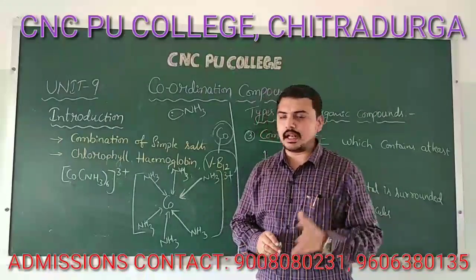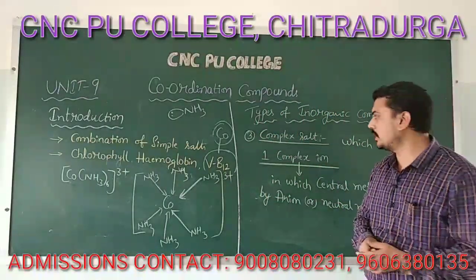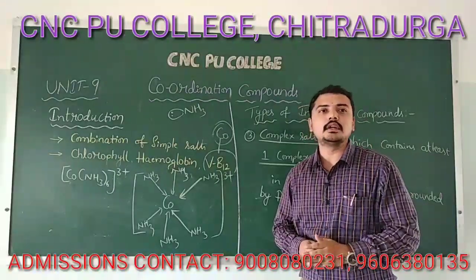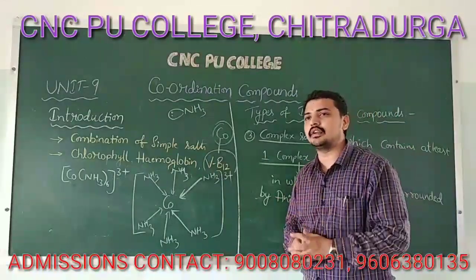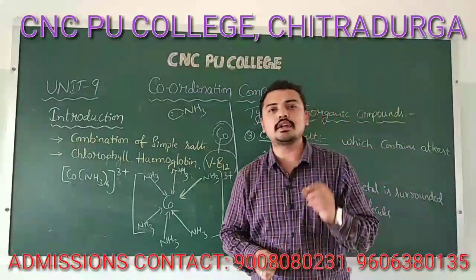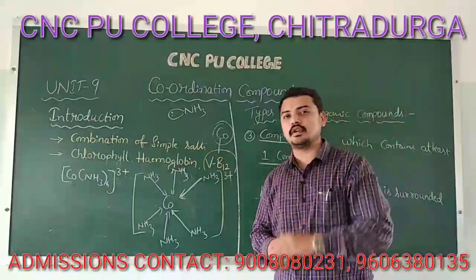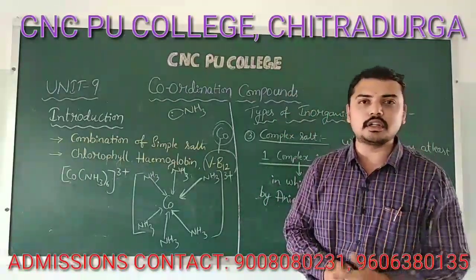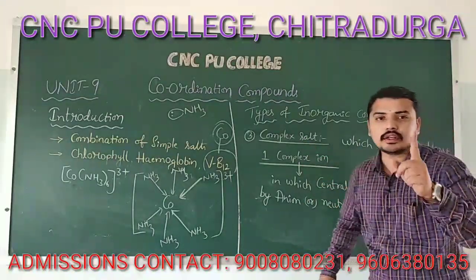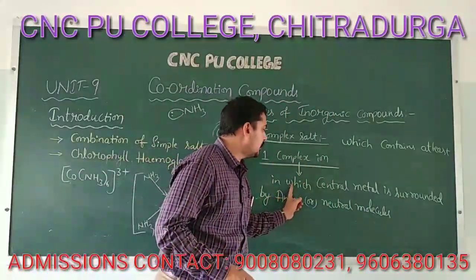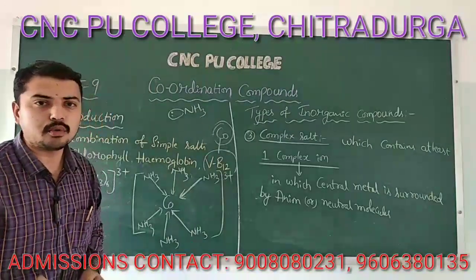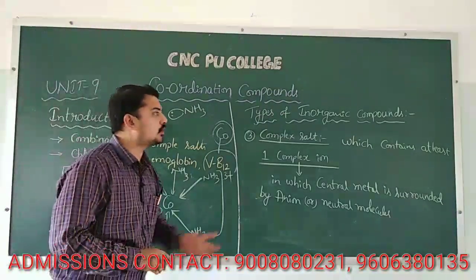So to recap: there are three types of inorganic salts. First, simple salt — which contains one anion (acid radical) and one cation (basic radical). Second, double salt — a combination of two simple salts. Third, complex salt — which contains at least one complex ion, in which a central metal ion is surrounded by anions or neutral molecules. This is all about the types of inorganic compounds and coordination compounds.